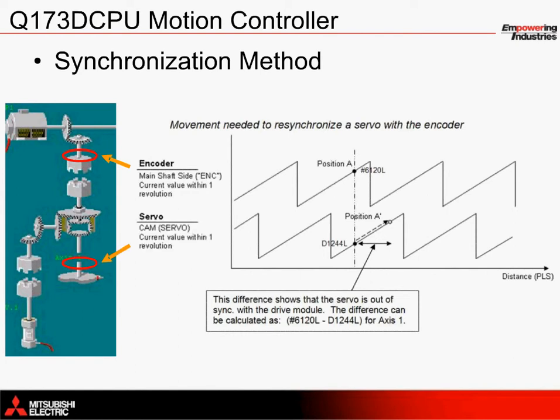In the phase drawing here, you'll see that the main shaft side value does not match the cam value since they are out of phase with each other. This can happen when a clutch opens suddenly and the drive or output module continues to move, or is commanded to move by the operator.